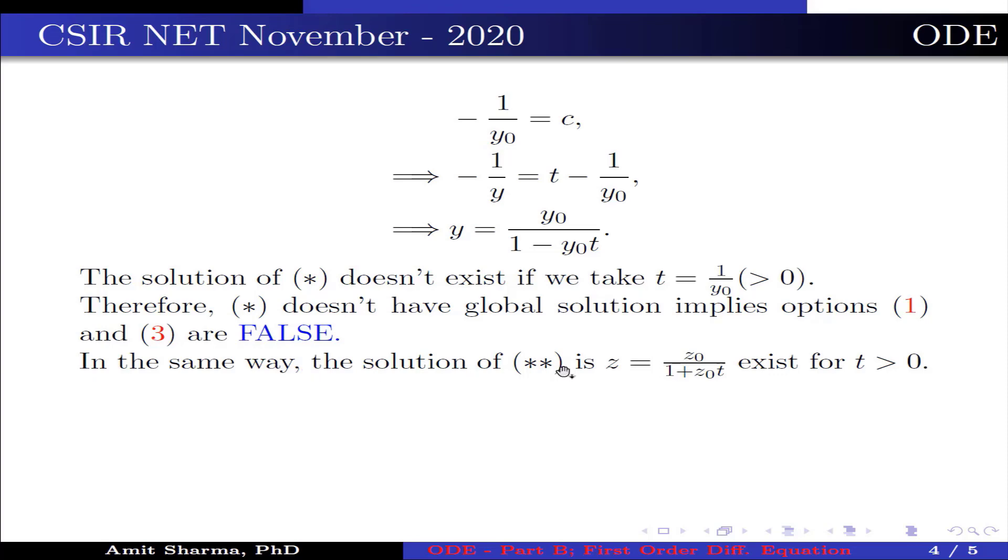In the same way, the solution of (**) is z = z₀/(1 + z₀t), which exists for t > 0. Therefore, (**) has global solution, which implies option 2 is false.